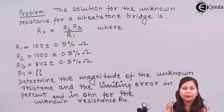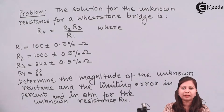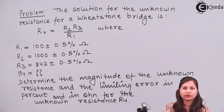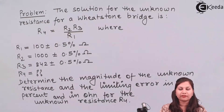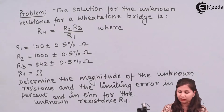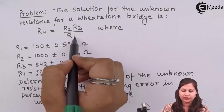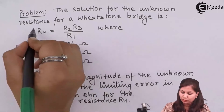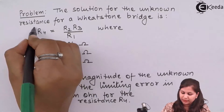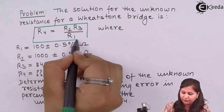Our question is that for a Wheatstone bridge, when we are measuring the resistance, the unknown resistance is given by the formula R4 = R2 · R3 / R1. So this is the formula given by a Wheatstone bridge.